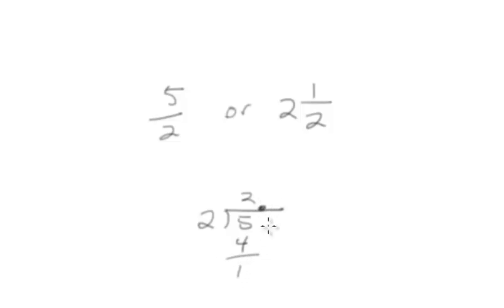So now I'm going to put a decimal place here. Add some zeros. Carry the 0 down. 2 goes into 10 5 times. So 5 seconds is the same as 2.5.